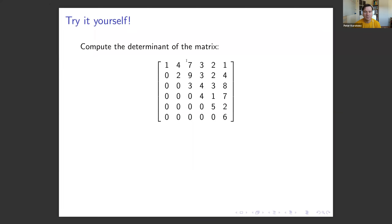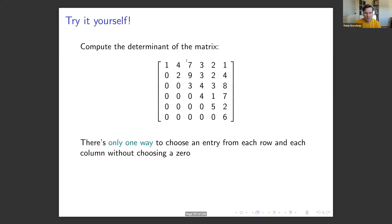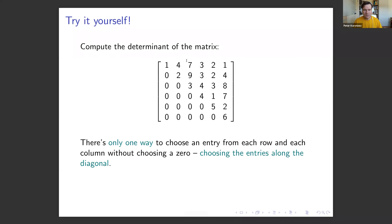How about an upper triangular matrix — one in echelon form with a pivot in every column? It has many zeros to our advantage. There is only one way to choose an entry from each row and each column without choosing a zero: you must choose the entries along the diagonal. So the determinant is simply the product of all diagonal elements, which in this example is 720.